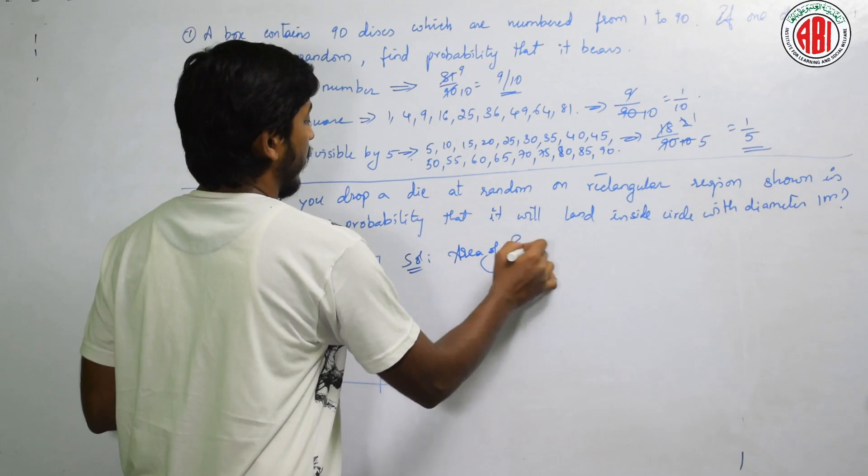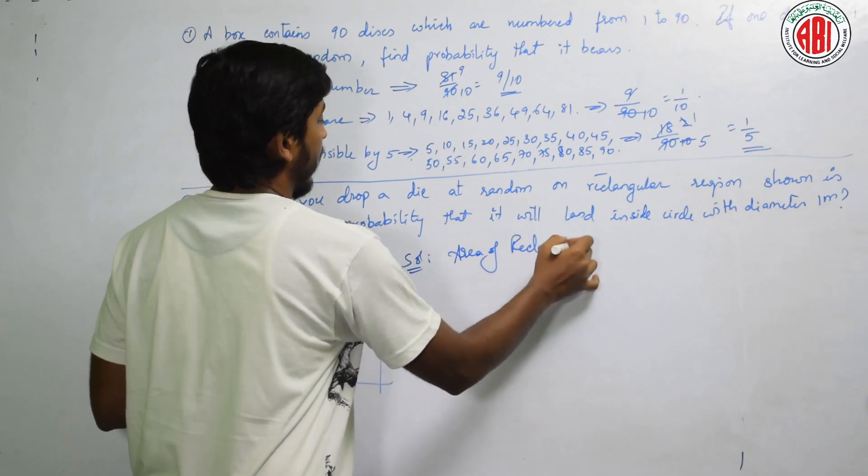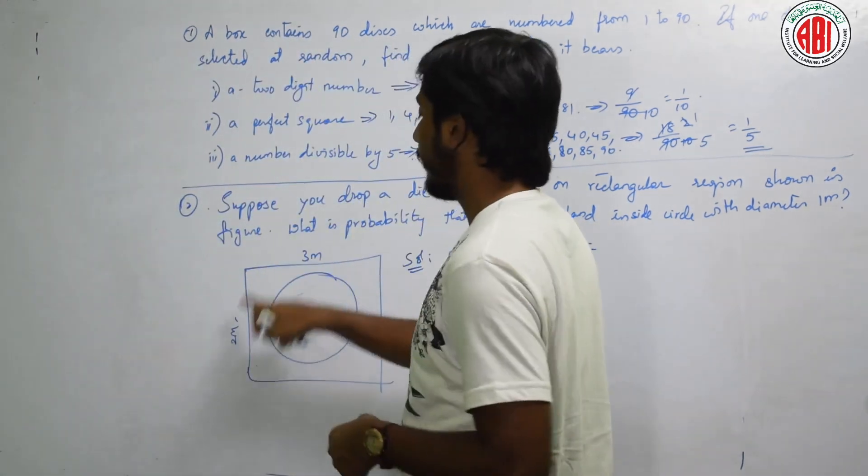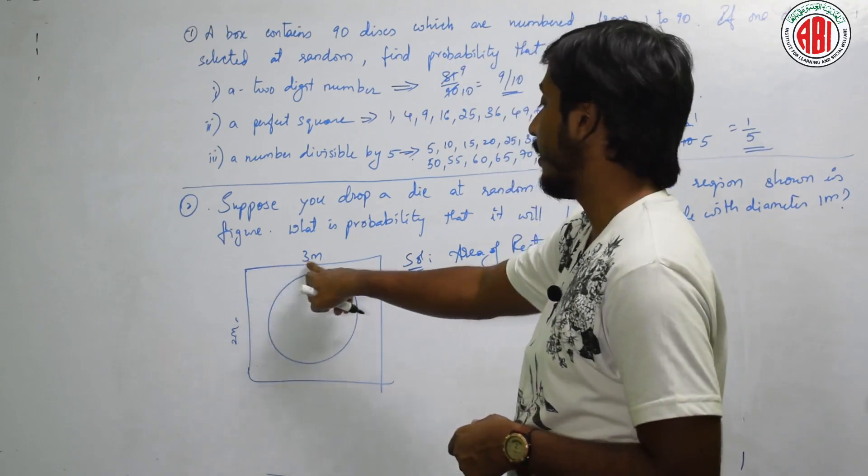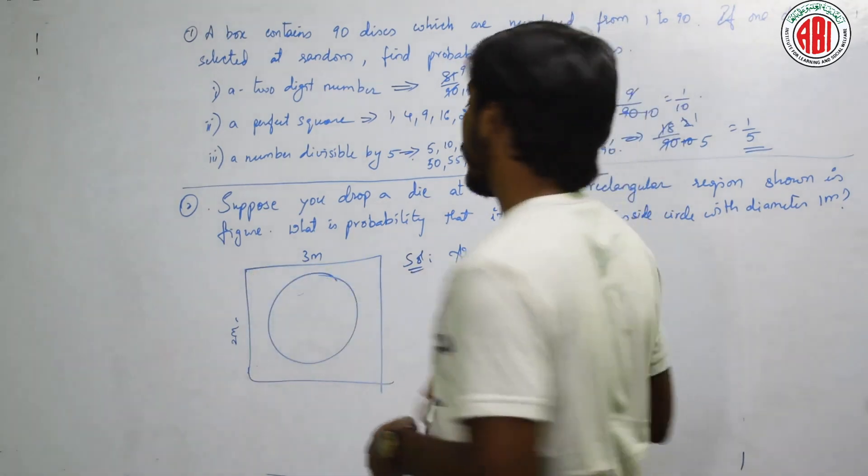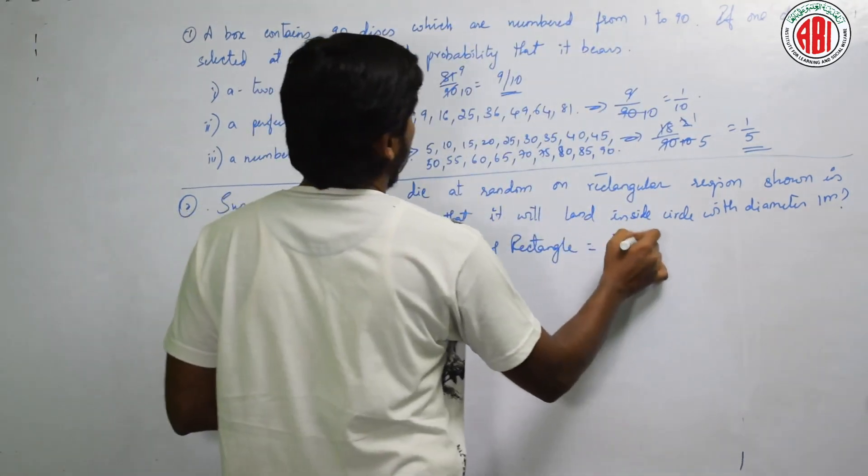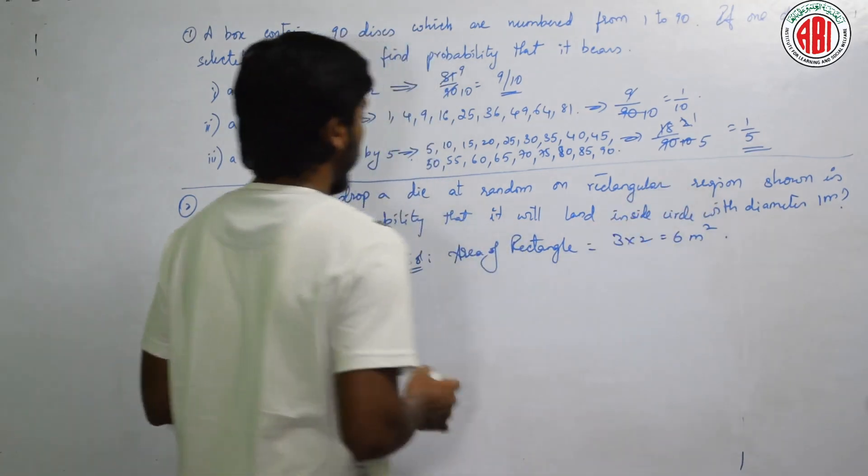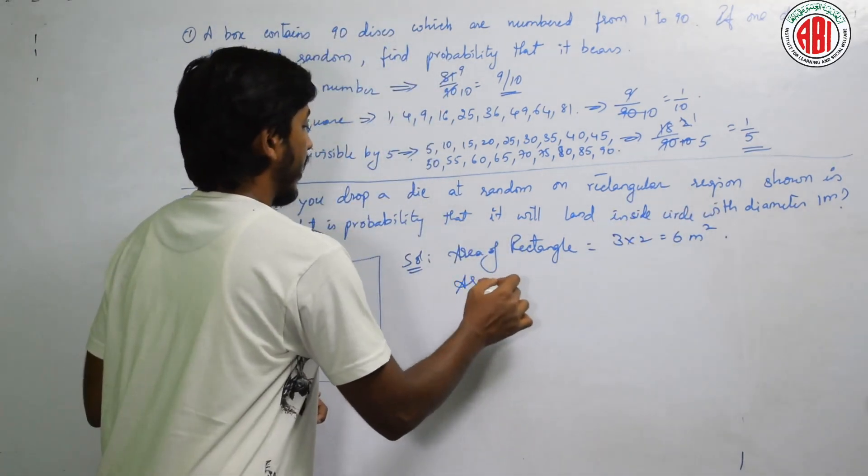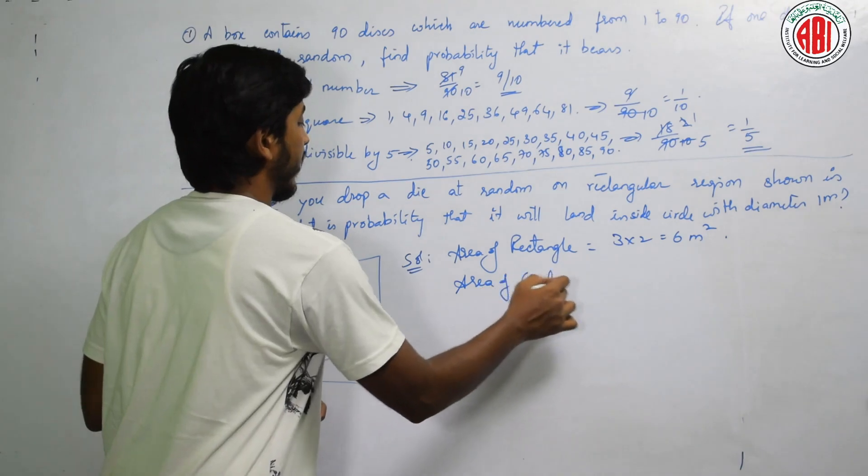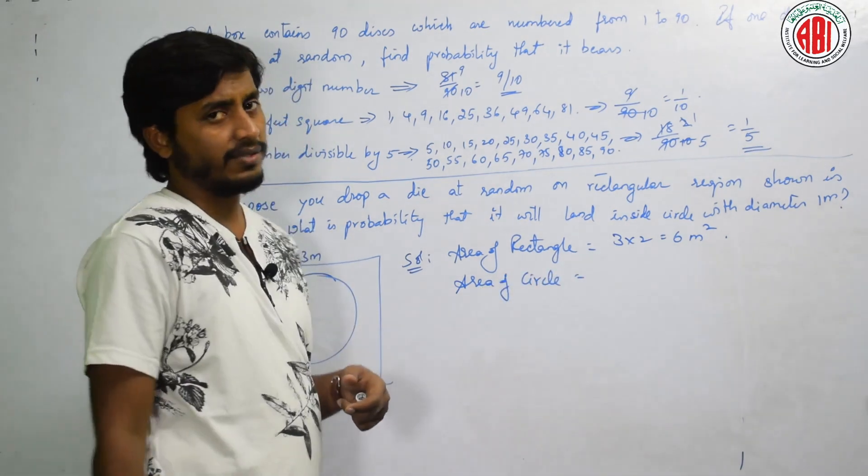That is, we have to find area of rectangle. Rectangle ka area is length into breadth. What is the length here? 3. Breadth is 2. That is 3 into 2, that is equal to 6 meter square.